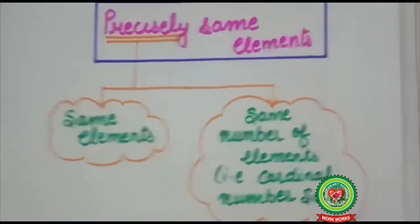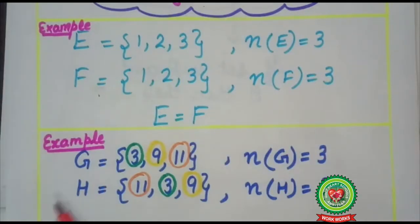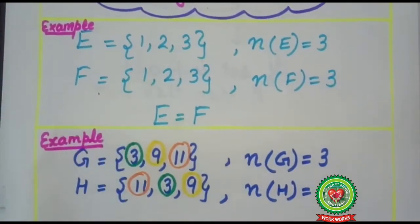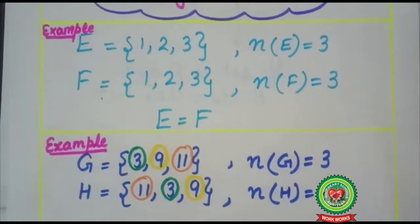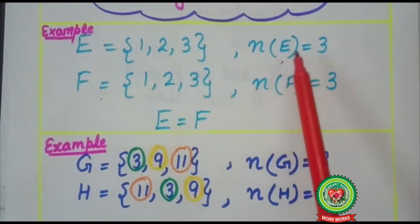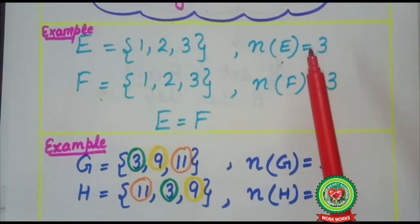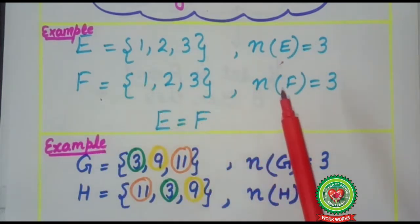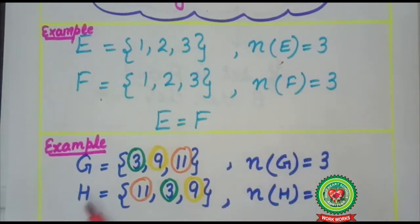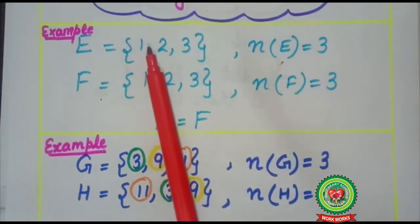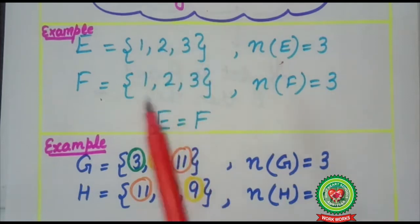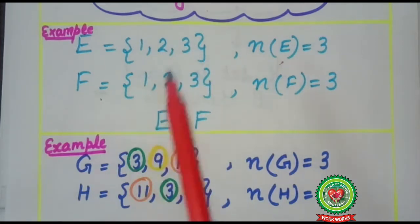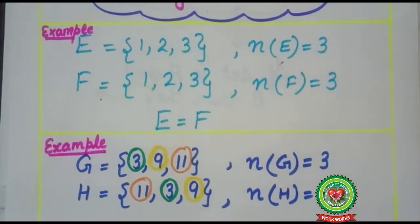Let's understand with an example. Consider two sets E and F. Here E is {1, 2, 3} and the cardinal number of E is 3, as three elements are present in the set. Set F is also {1, 2, 3}, and the cardinal number of F is also 3. As we observe, elements 1, 2, 3 are present in both sets — they have the same elements as well as the same cardinal number. So it implies that set E is equal to set F.